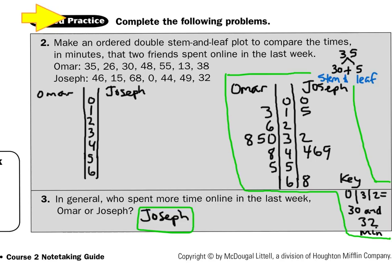Now the guided practice: make an ordered double stem and leaf plot comparing the times in minutes that two friends spent online last week — Omar and Joseph. The times go from 0 minutes up to 68 minutes, so I put double bars and in the middle of the stem I have 0s, 10s, 20s, 30s, 40s, 50s, and 60s. For Omar: 35 — go to the 30s, put a 5, cross it out. 26 — go to the 20s, put a 6, cross it out. 30 — put a 0 after the 3, cross it out. 48 — put an 8 after the 40s, cross it out. 55 — put a 5 after the 50s. 13 — put a 3 after the 10s. 38 — put an 8 after the 30s.